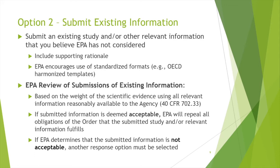For Option 2 — to submit existing information — you must submit an initial response and indicate whether the submittal will be part of a consortium. Submit an existing study and/or other relevant information that you believe EPA has not considered. Submit a supporting rationale as to why the data being submitted should be used in place of de novo testing. For example, if a recipient is submitting existing information on an analogous chemical in lieu of the subject chemical, the recipient must provide a robust rationale explaining how the submitted data is sufficiently similar and appropriate for use. EPA encourages the use of standardized formats such as the OECD harmonized templates, and requires that full study reports also be submitted.